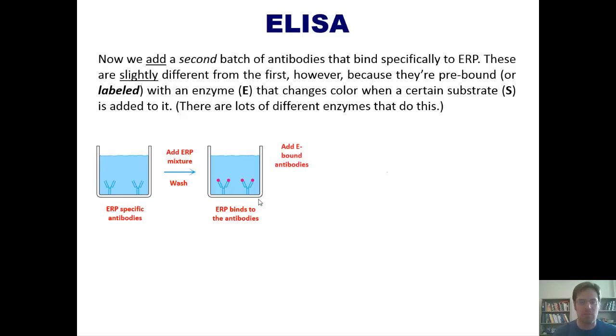Now, at this point, we add a second batch of antibodies that are also as specific to ERP, just like the antibodies that are attached to the bottom well. This second batch of antibodies, however, are slightly different from the first because they are prebound or labeled with an enzyme, shown here as the capital letter E, that changes color when a certain substrate is added to it. Now, there are lots of different enzymes that do this, and which one you use will vary depending on the specific assay you're trying to do. Here's the point. I've got these antibodies that are specific to ERP attached to the bottom of a well. I've then stirred a bunch of ERP, which sticks to the top of these antibodies, and I then wash out all of the crap. I now introduce a second solution of these same antibodies, except these ones have been attached to an enzyme that is a special glowy enzyme. We'll talk about that momentarily. As these are stirring around solution, these antibodies will attach to the top of these ERPs, forming sort of a little sandwich of antibody, ERP, antibody, with this capital E enzyme dangling off of the top.